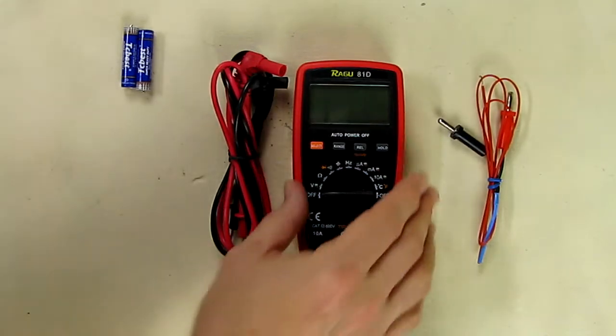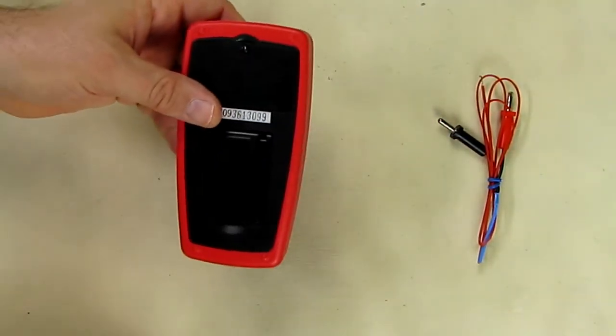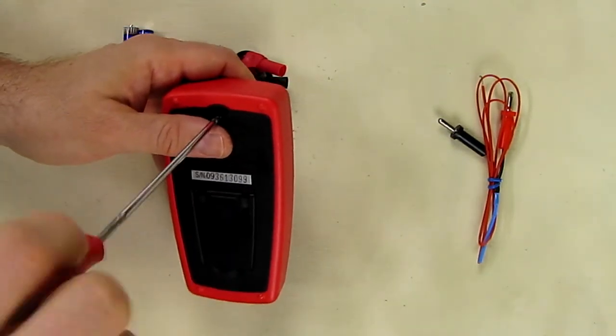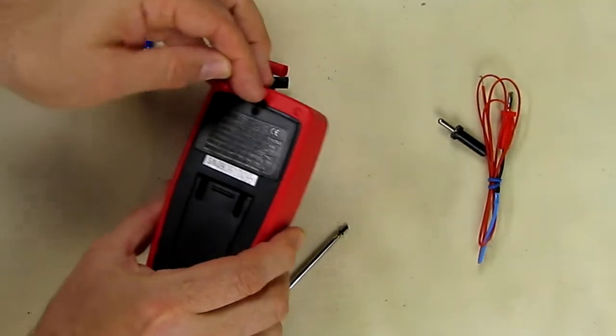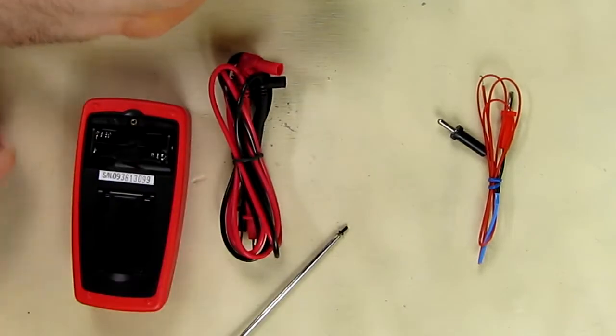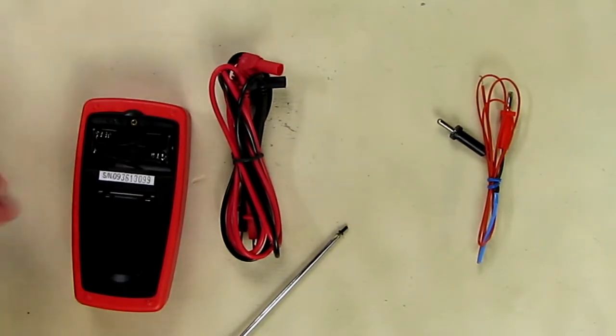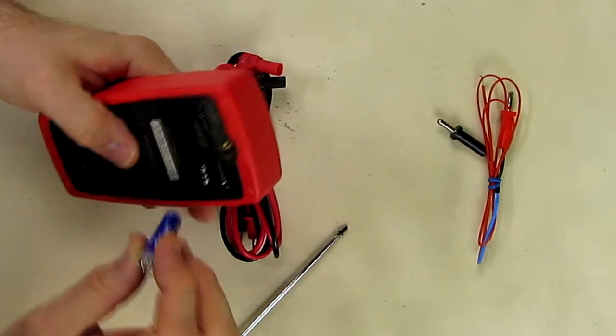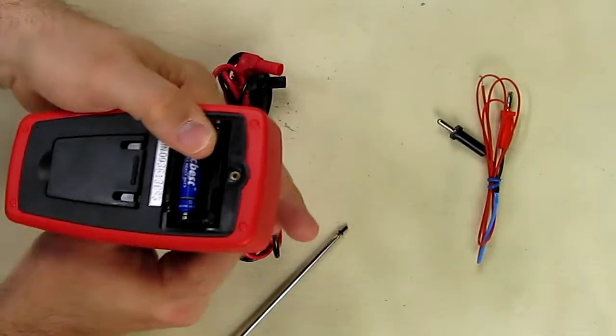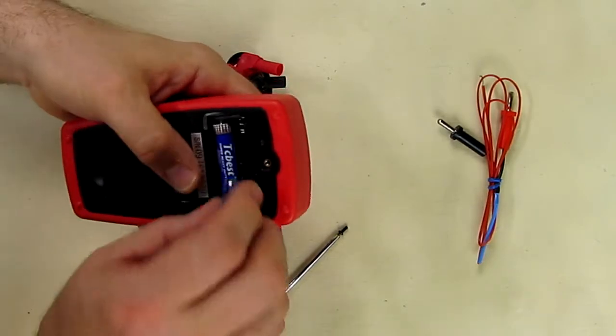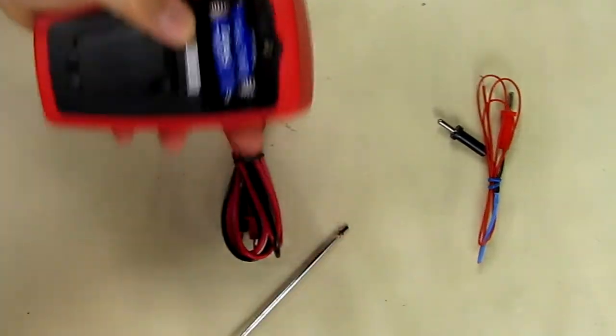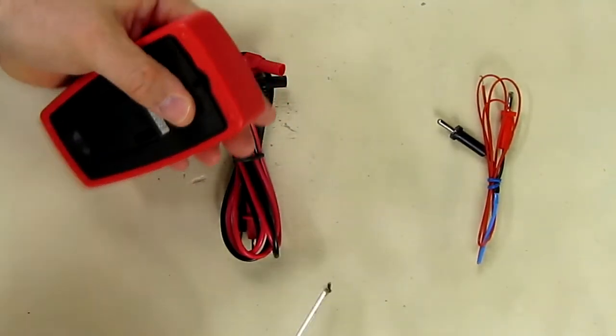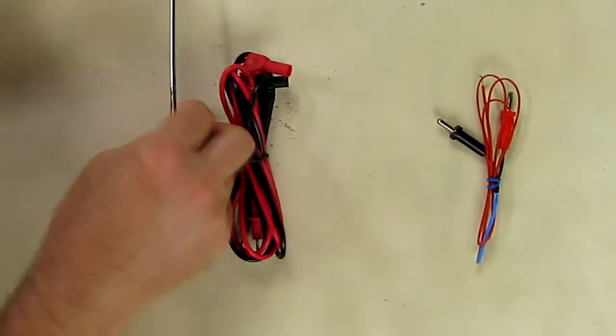Now the first thing you want to do is put the batteries in and on the bottom of the unit there is a little Phillips head screw. You want to go counterclockwise on that and lift it up, and inside the meter here is a little holder for the batteries. You want to put the negative on the spring, positive on the little tab, just like that. And then you'll take the cover, put it back on and then put the screw back in.